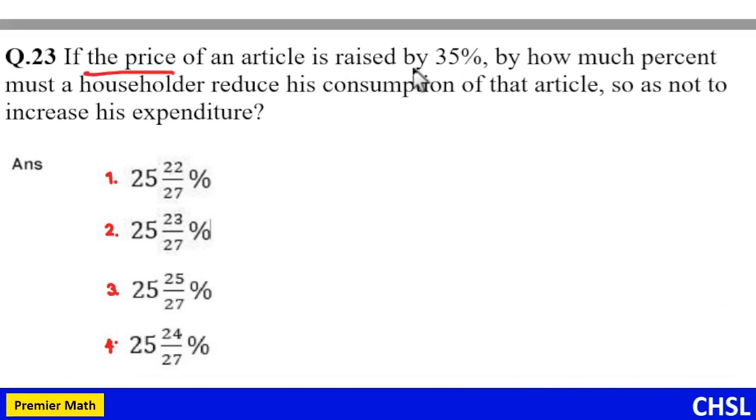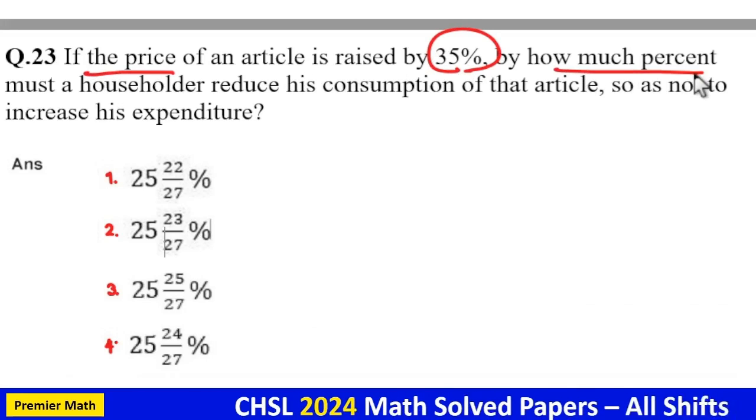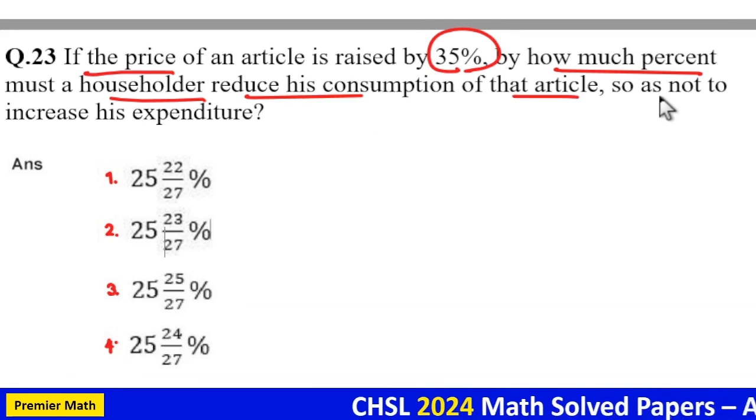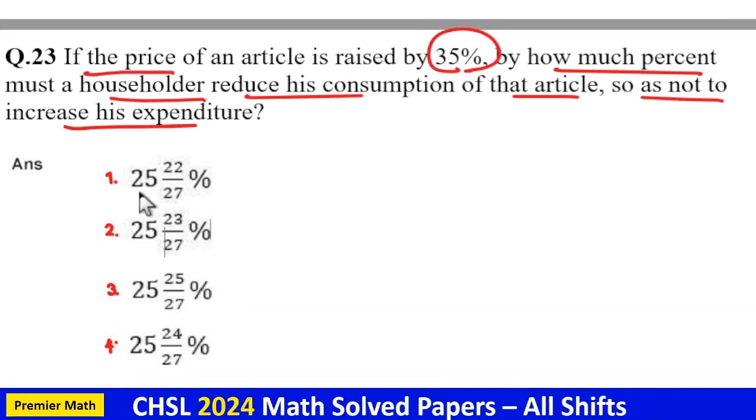If the price of an article is raised by 35 percent, by how much percentage must a householder reduce his consumption of that article so as not to increase his expenditure?